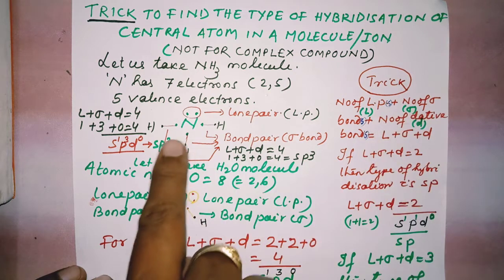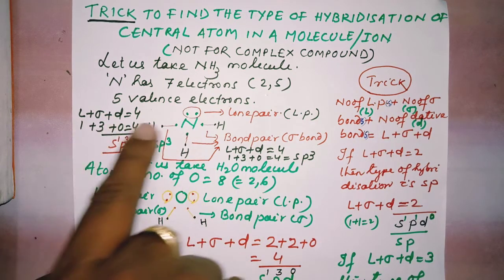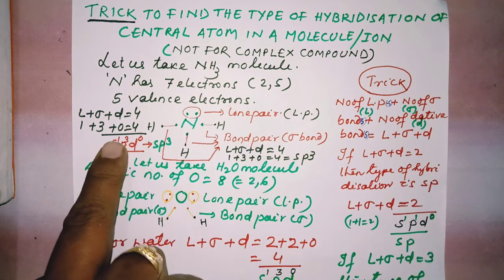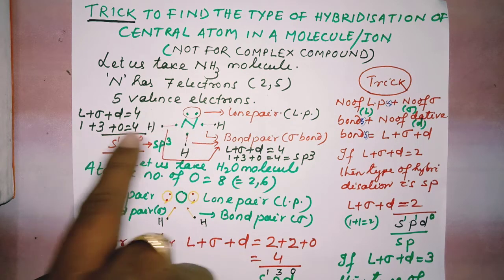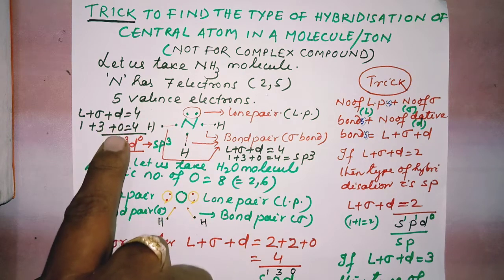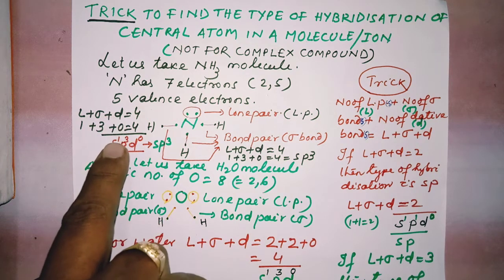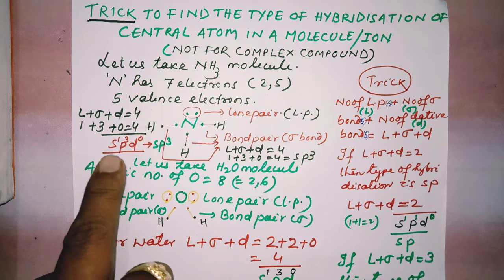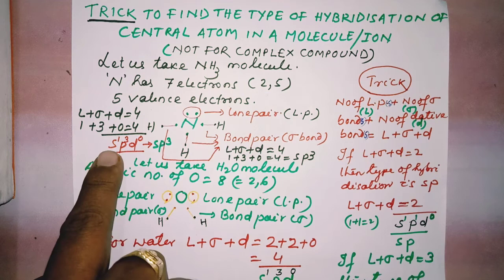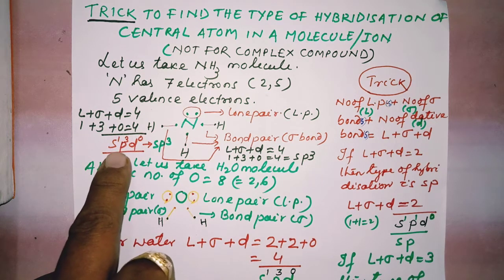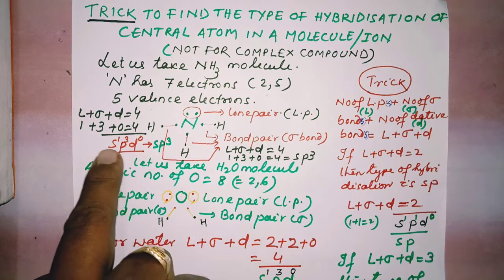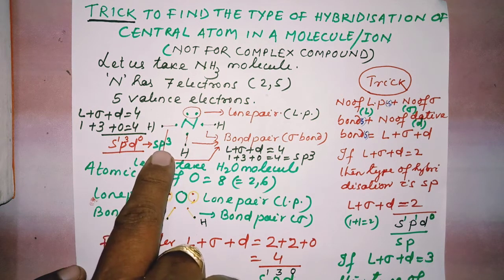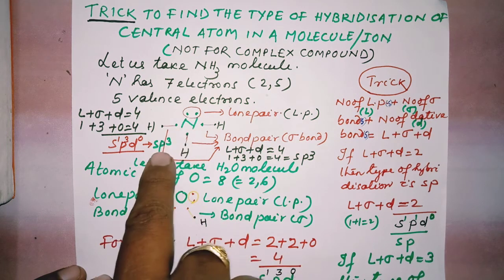Applying this trick to ammonia: N has 1 lone pair, 3 sigma bonds, and 0 dative bonds. So 1 plus 3 plus 0 equals 4. S takes 1, P takes 3 (since P can form 3 hybrid orbitals), and 4 minus 4 equals 0, so D has no hybrid orbital. Therefore, N in ammonia is SP³ hybridized.